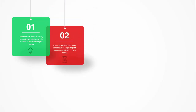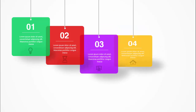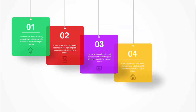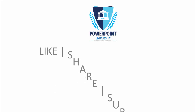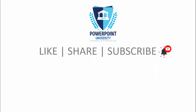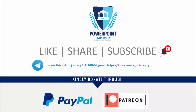Then the third option, fourth option, and fifth option appear. Depending on your requirement, you can increase or decrease the options. If you have not subscribed to my channel PowerPoint University, please subscribe now and enable the bell notification icon. You can join my Telegram group with the help of the link provided, and if you'd like to contribute to my channel you can do it through PayPal or Patreon — the link is in the video description.